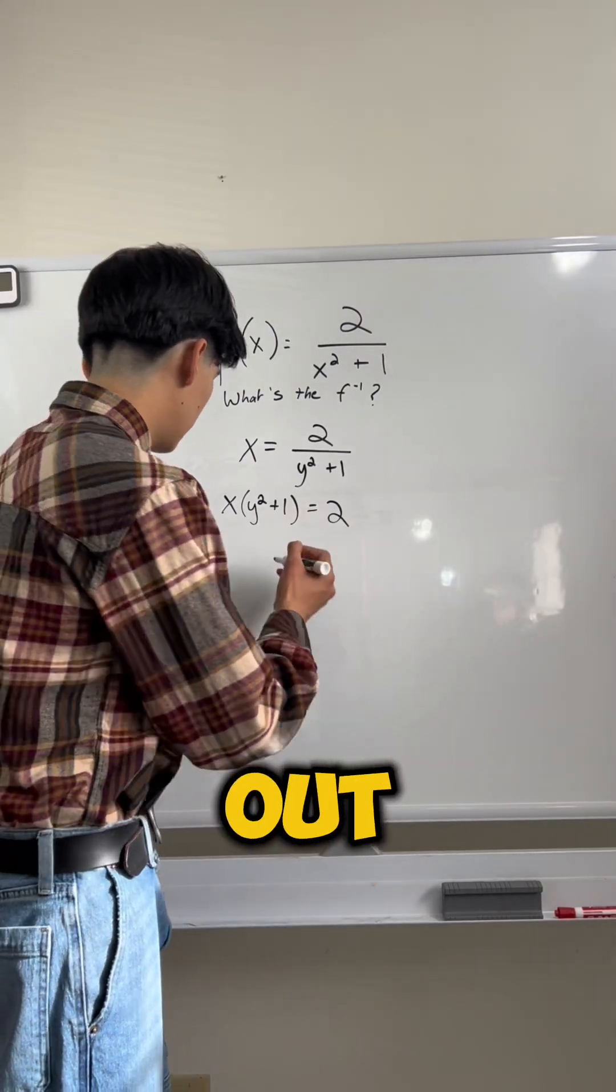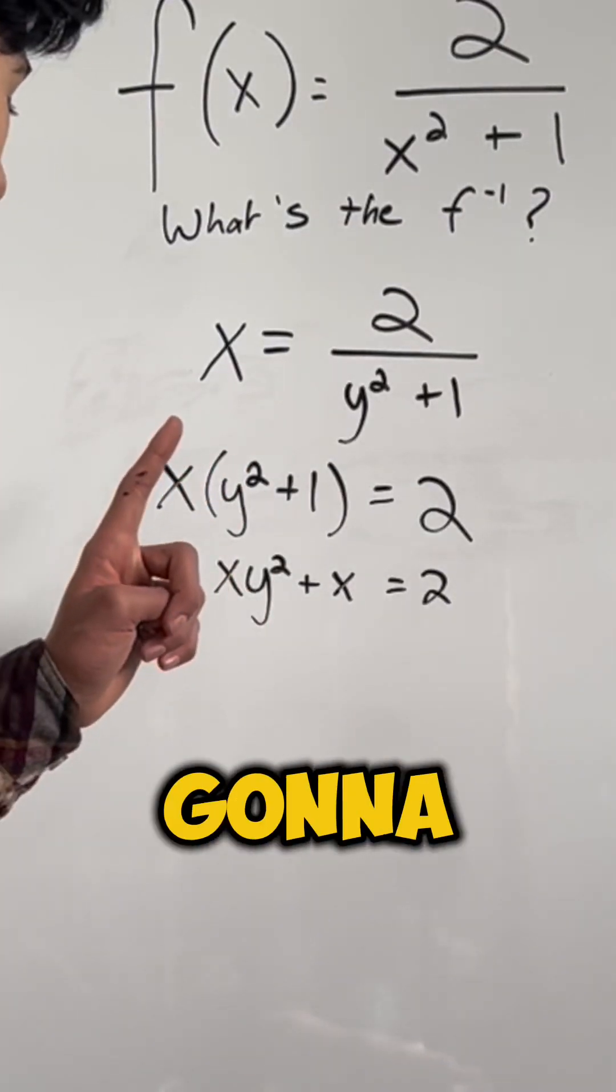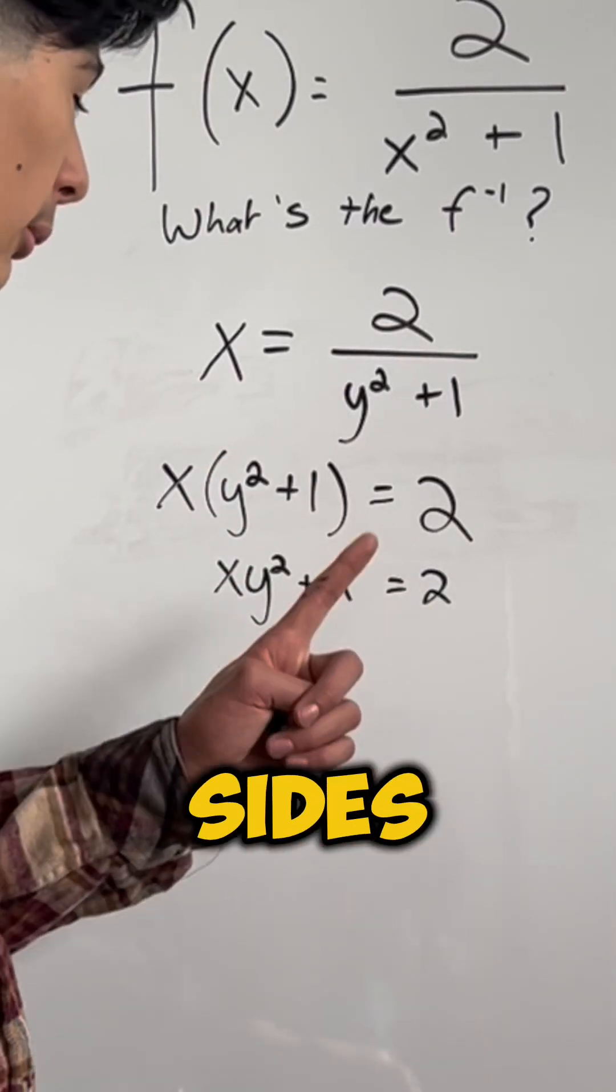Then, I'm going to expand this out. After that, I'm going to subtract x from both sides to get rid of this x.